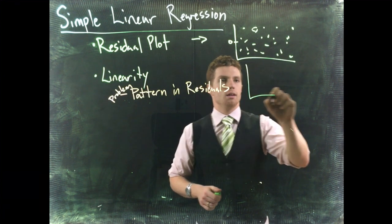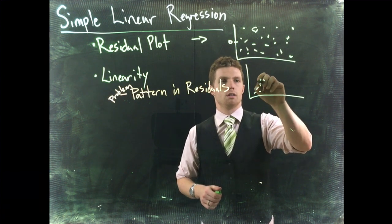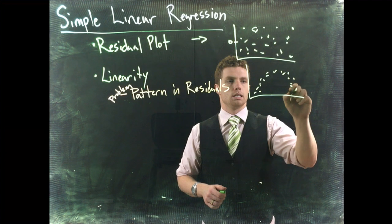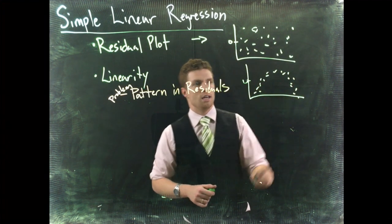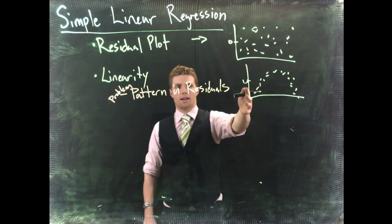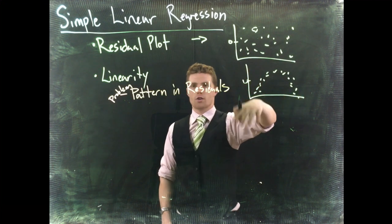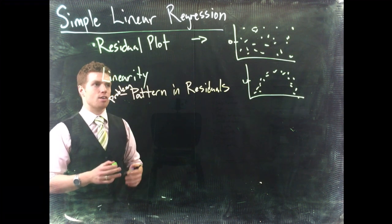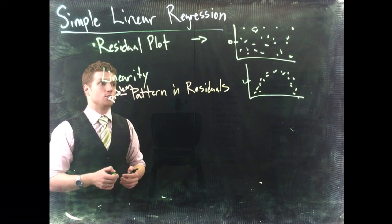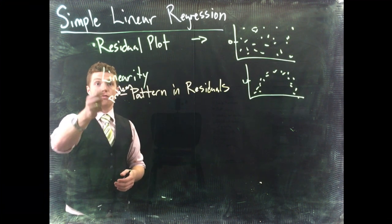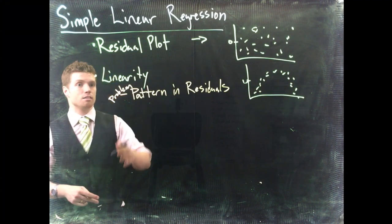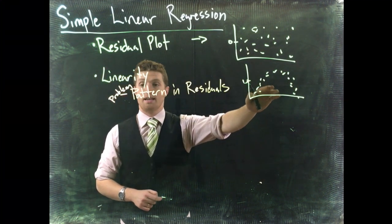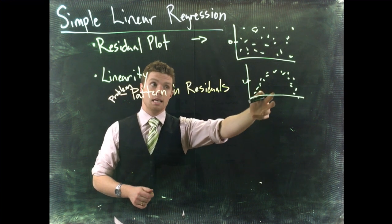We might see something in the residuals that looks like this. If we see this there's obviously a pattern that looks like there's some sort of quadratic pattern to our residuals. If that happens we have a problem and we need to address it. If we have a problem with the linearity, if we see this, that means that our data is not linear and we shouldn't do our simple linear regression.